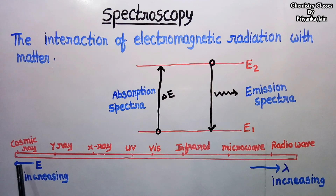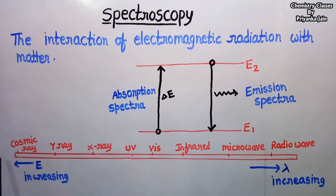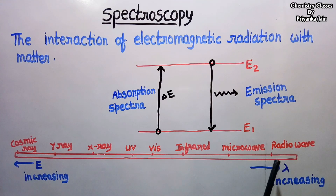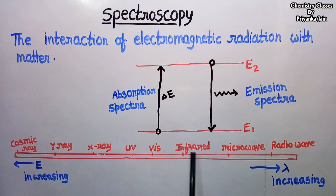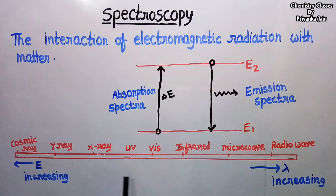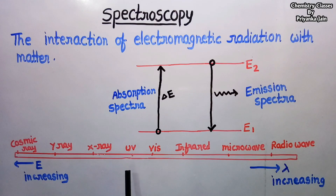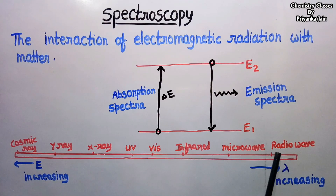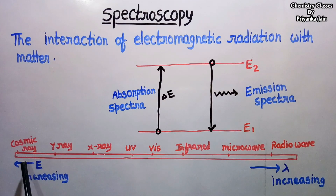Electromagnetic radiation spans a very broad region and can be divided into several regions. The highest energy belongs to cosmic rays, while the lowest energy region is radio waves. Between these regions, there are microwaves, infrared, visible, UV, X-rays, and gamma rays. Since wavelength is inversely proportional to energy according to E = hc/λ, the wavelength increases toward the radio wave side — meaning radio waves have the highest wavelength while cosmic rays have the lowest wavelength.